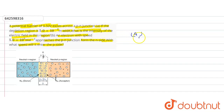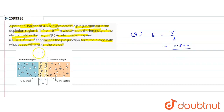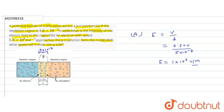In part A, we have to find the electric field intensity. Electric field intensity E equals V divided by d. Here V is given as 0.50 volt, and d is the depletion region width: 5×10⁻⁷ meter. So E equals 1×10⁶ volt per meter.